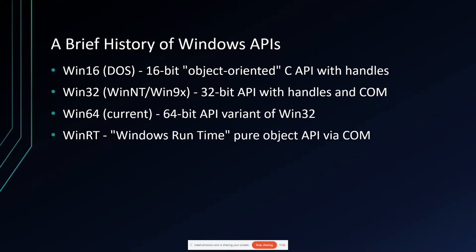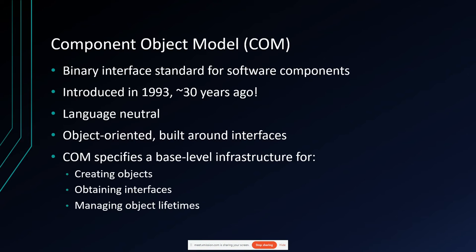In Win32, because it originates as a C API with Win16 heritage, the newer features of the operating system show up as COM interfaces. They actually have a method for mechanically generating a C API for all of the COM interfaces and their methods, although I know literally zero people who have ever programmed to that. By the time COM comes along, everyone is using C++ and interacting with interfaces.